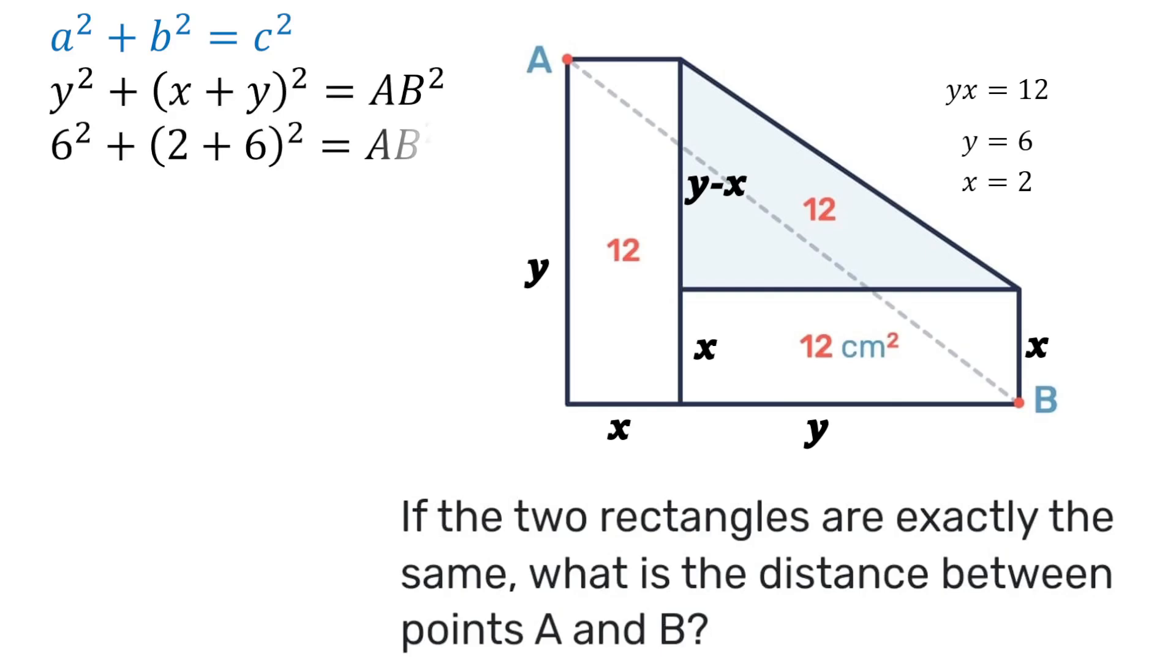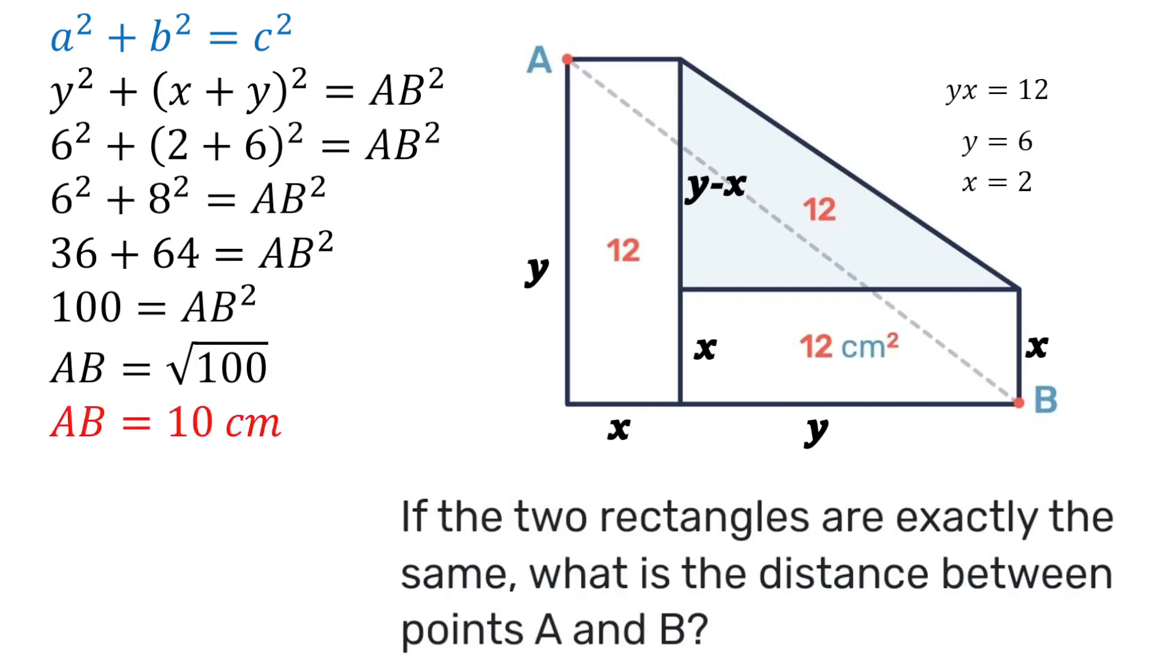Substituting we'll have the square of 6 plus the square of 2 plus 6 is equal to AB squared. So 2 plus 6 is 8. Square of 6 is 36. The square of 8 is 64. 36 plus 64 gives us 100. So AB is going to be the square root of 100 which gives us that the answer is 10 centimeters.